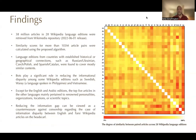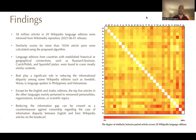We investigated 38 million articles in 28 Wikipedia language editions and calculated similarity scores for more than 103 million article pairs. Language editions from countries with established historical or geographical ties — such as Russian, Ukrainian, Czech, Polish, and Spanish-Catalan — were found to have similar contents. Bots play a significant role in reducing information disparity among Wikipedia editions such as Swedish, Vietnamese, and Urdu. Except for English and Arabic editions, the top five articles in other languages mainly relate to celebrities, locations, organizations, or scientific topics.